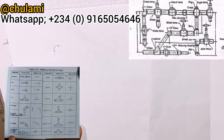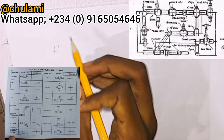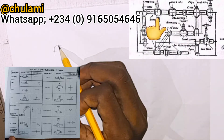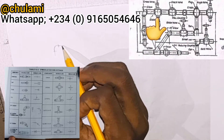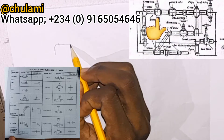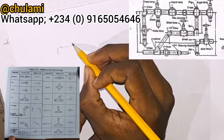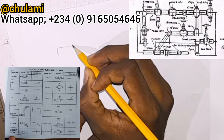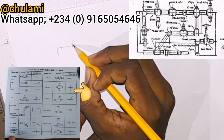Moving over, next we have a cross valve — this is a pipe in the pipeline — drawn something like this.